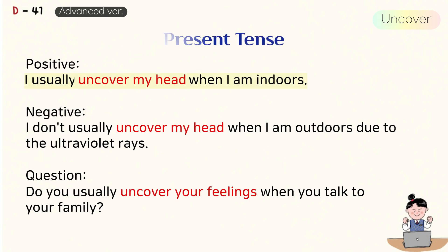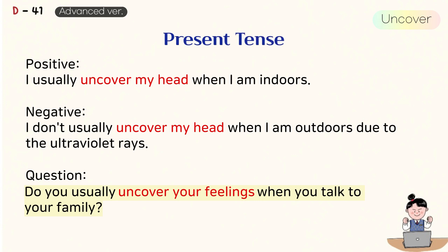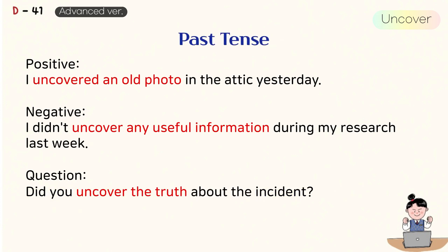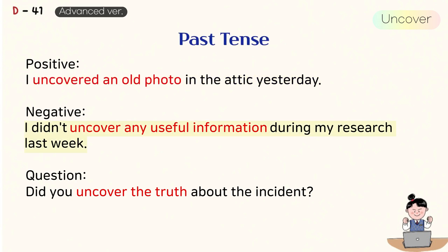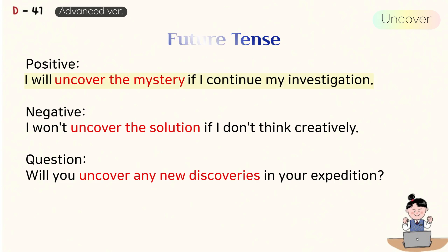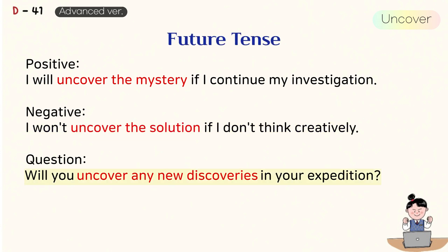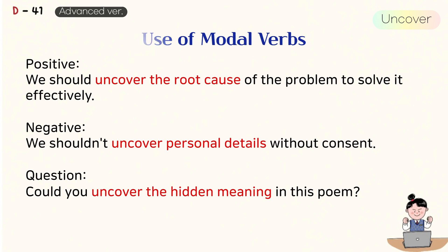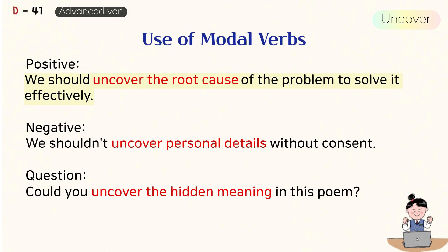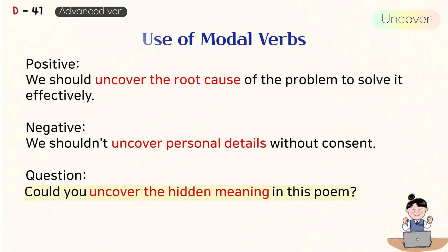Present tense: I usually uncover my head when I am indoors. I don't usually uncover my head when I am outdoors due to the ultraviolet rays. Do you usually uncover your feelings when you talk to your family? Past tense: I uncovered an old photo in the attic yesterday. I didn't uncover any useful information during my research last week. Did you uncover the truth about the incident? Future tense: I will uncover the mystery if I continue my investigation. I won't uncover the solution if I don't think creatively. Will you uncover any new discoveries in your expedition? Use of modal verbs: We should uncover the root cause of the problem to solve it effectively. We shouldn't uncover personal details without consent. Could you uncover the hidden meaning in this poem?